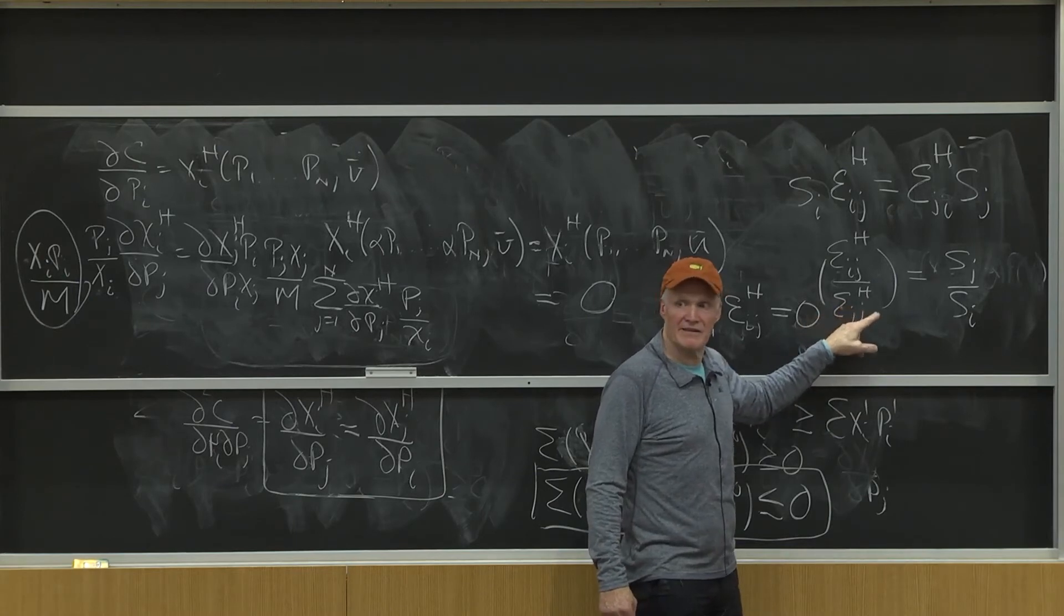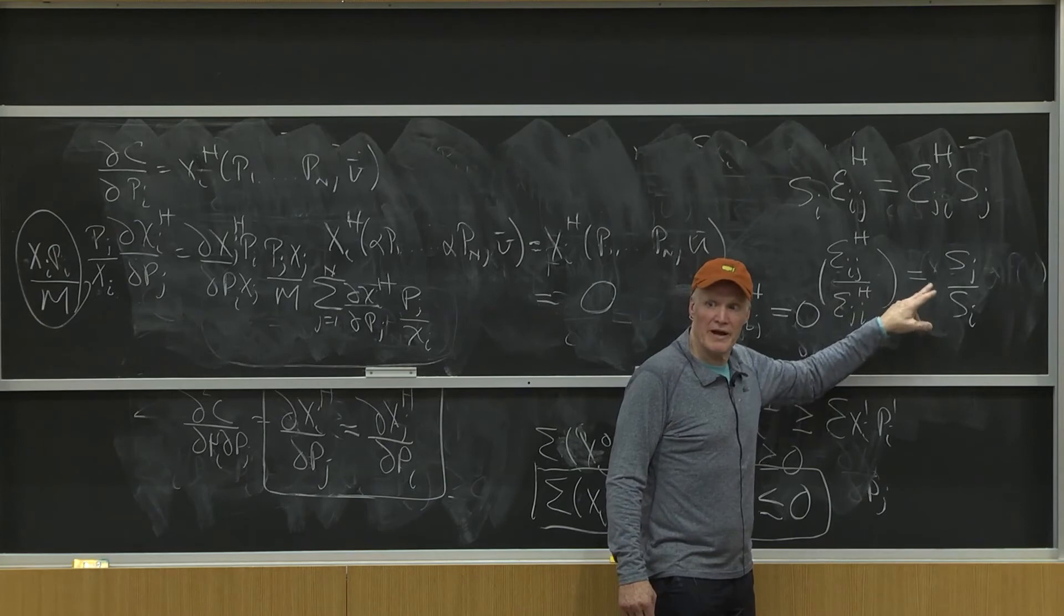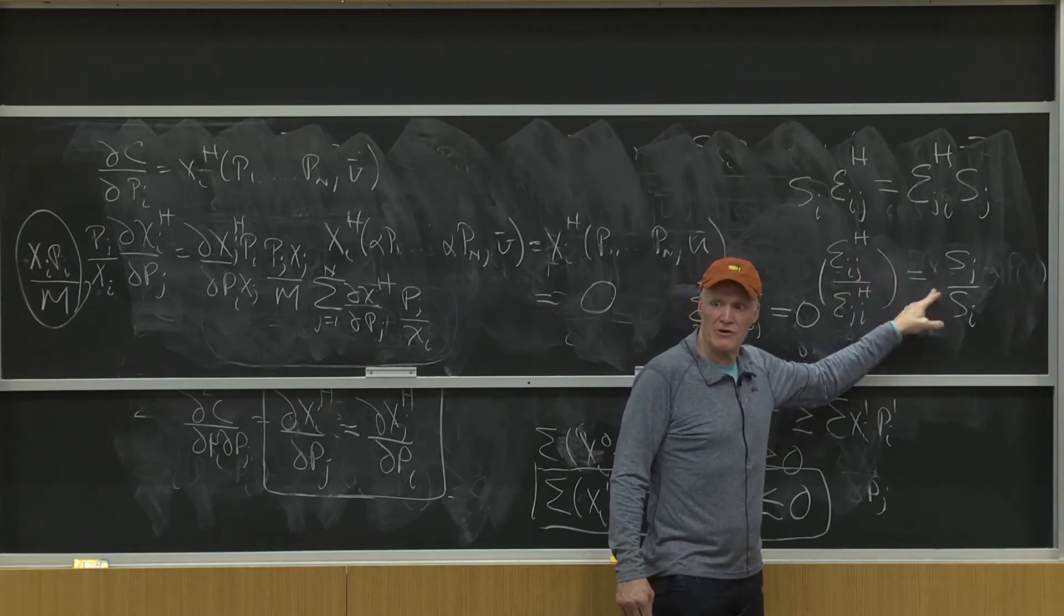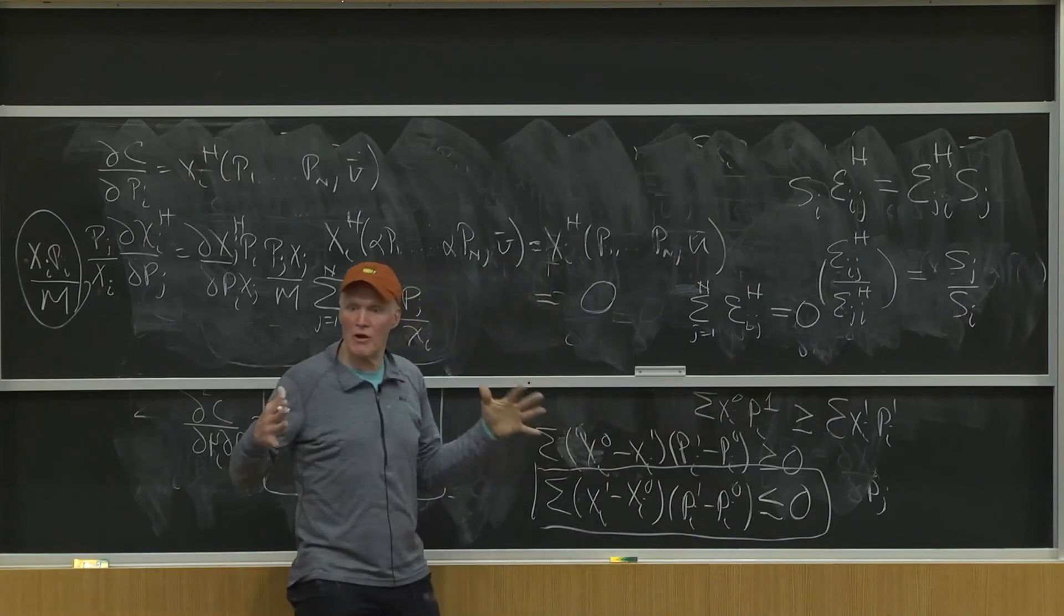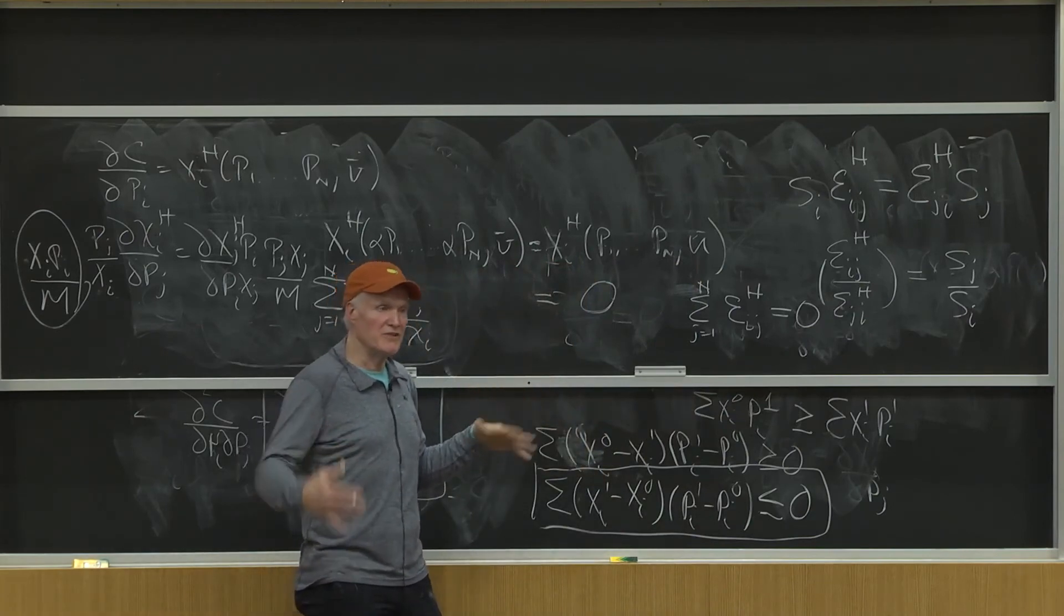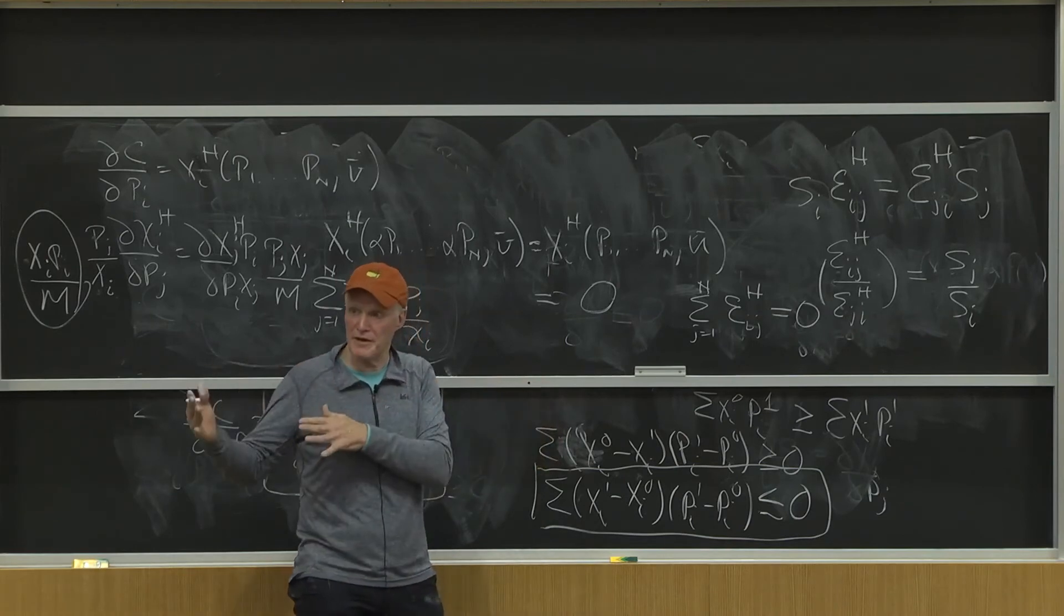This is like the tail and the dog. The dog wags the tail, the tail don't wag the dog. That's really all this says. The bigger one, the bigger good, is more important for the small good than the small good is for the big good.